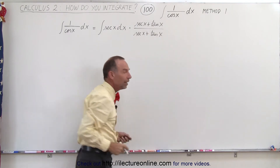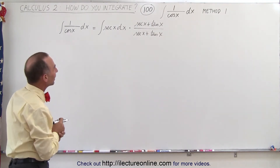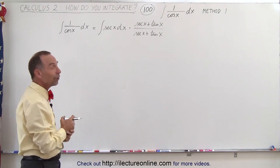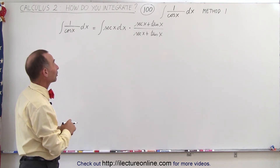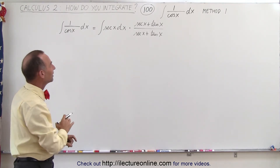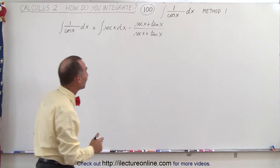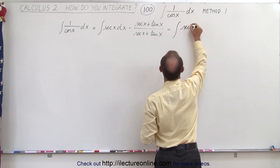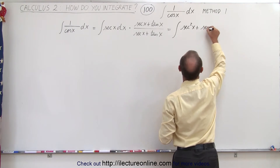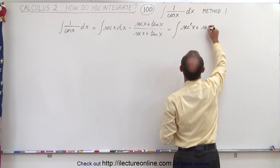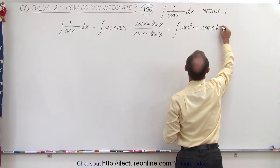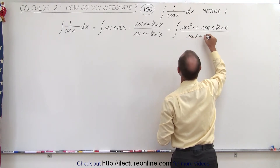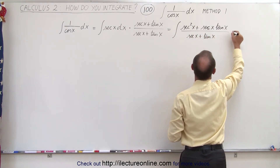Of course, this is still equal to 1, but when we do that, we have a means of actually integrating it. So when we multiply this out, we get the secant squared of x plus the secant of x times the tangent of x, all divided by the secant of x plus the tangent of x, and that would be dx. Now you say, it's like jumping from the frying pan into the fire — how do you integrate this?